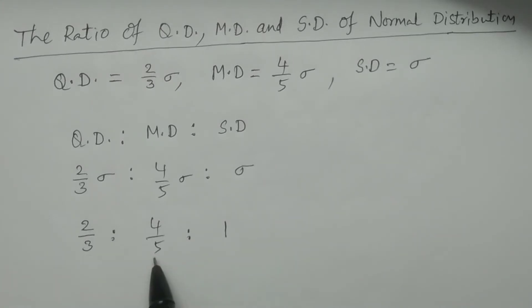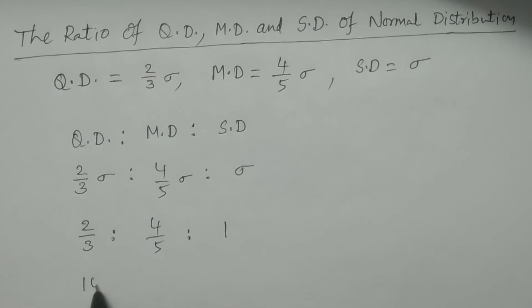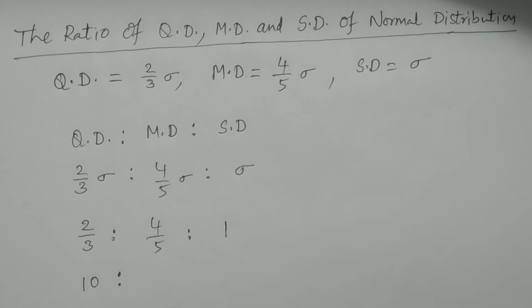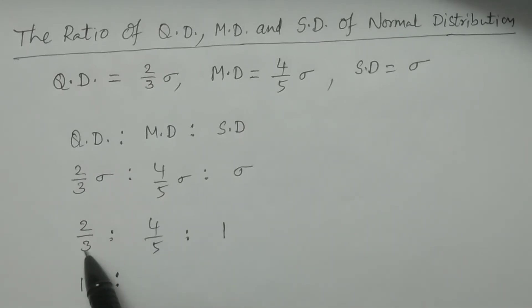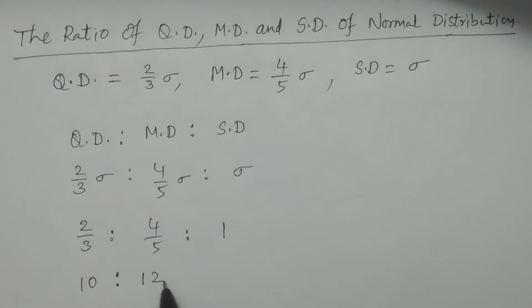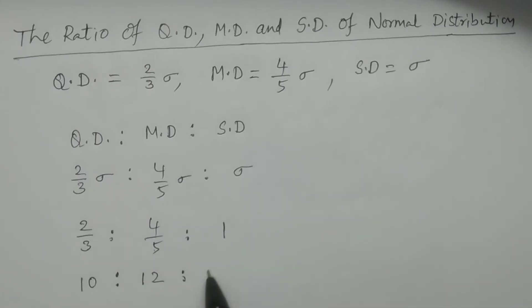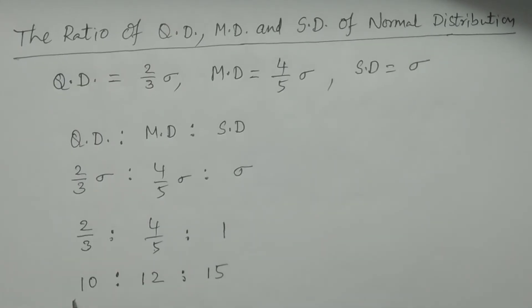Multiplying through by the LCM of 15: 5 times 2 gives 10, 4 times 3 gives 12, and 5 times 3 gives 15. Therefore the ratio is 10 to 12 to 15.